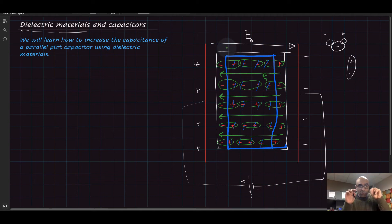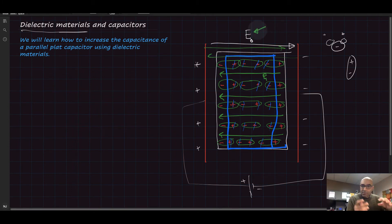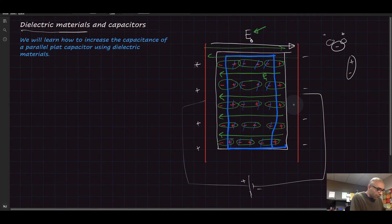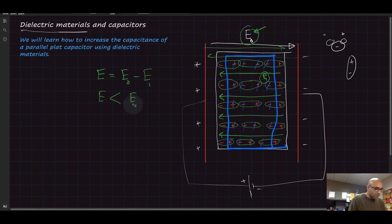Since the electric field is a vector quantity, if E₀ is pushing one way and E₁ acts in the opposite direction, the resulting electric field E will be weakened. The resulting electric field is E = E₀ − E₁. As you can see, this E that results from the presence of the slab is less than the original electric field E₀.